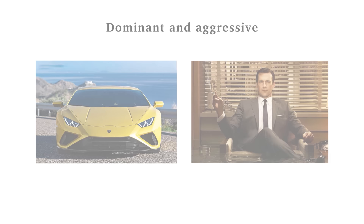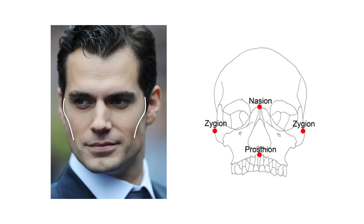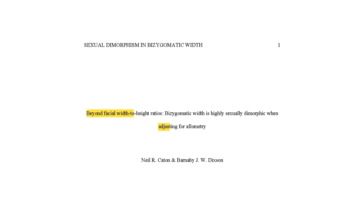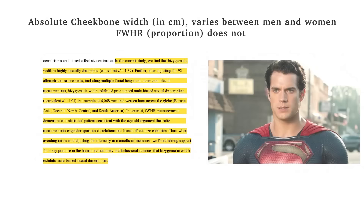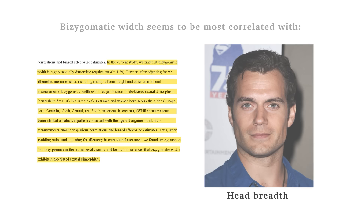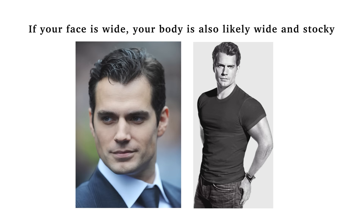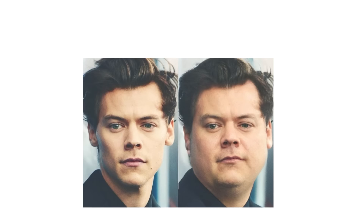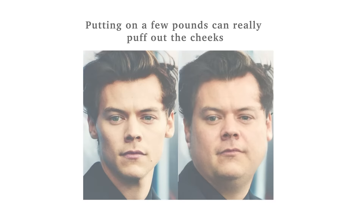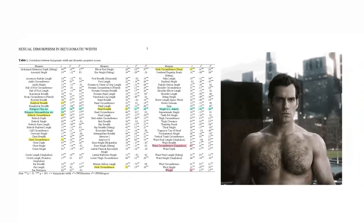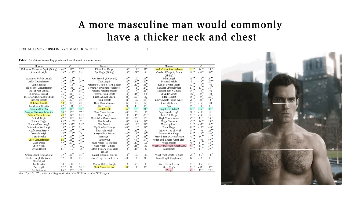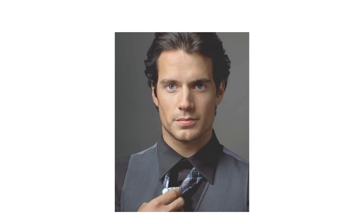This is an attractive and masculinising trait because it signals strong dentofacial growth or bone structure both laterally and forward, and is usually associated with high cheekbones. A study by Catton and Dixon examined sexual dimorphism as it relates to bisygomatic width, finding stark sexually dimorphic differences. The bisygomatic width is most correlated with shoulder width, butt circumference, chest circumference and head breadth — if your face is wide, your body is generally also wide and stocky. Henry definitely possesses all of those traits.